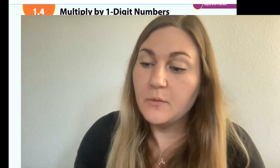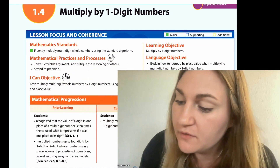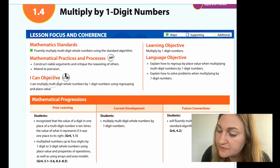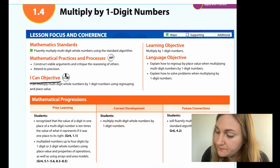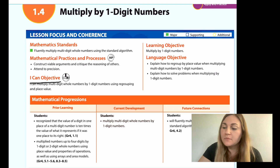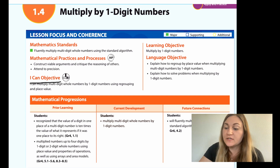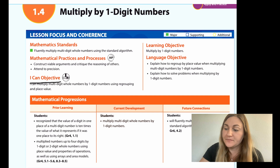Hi, I'm Natalie Rhodes and this is IntoMath's 5th grade, Module 1, Lesson 4. I want to start off by going over the I Can objective found here. It says: I can multiply multi-digit whole numbers by one-digit numbers using regrouping and place value.